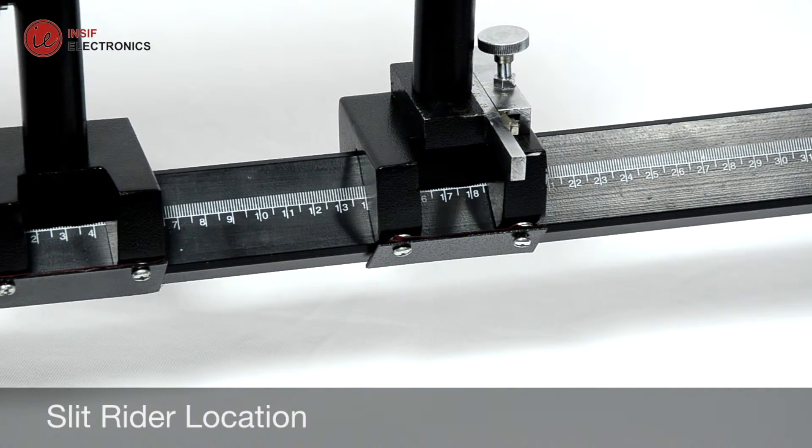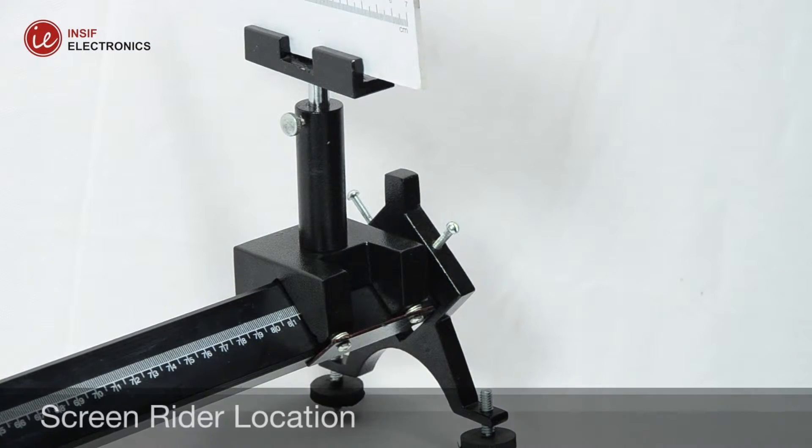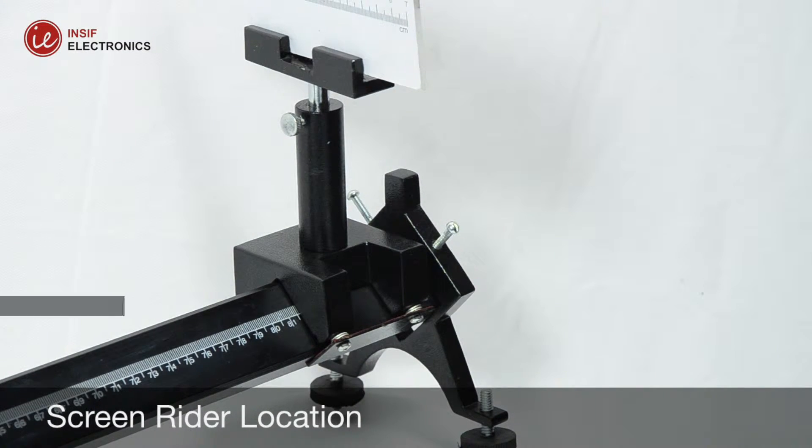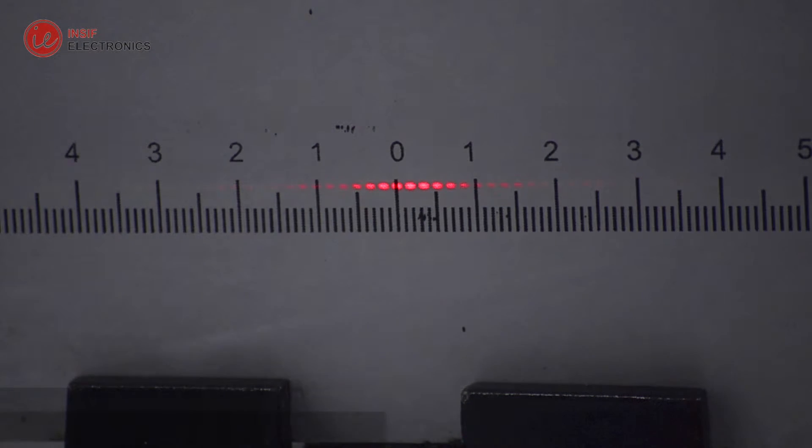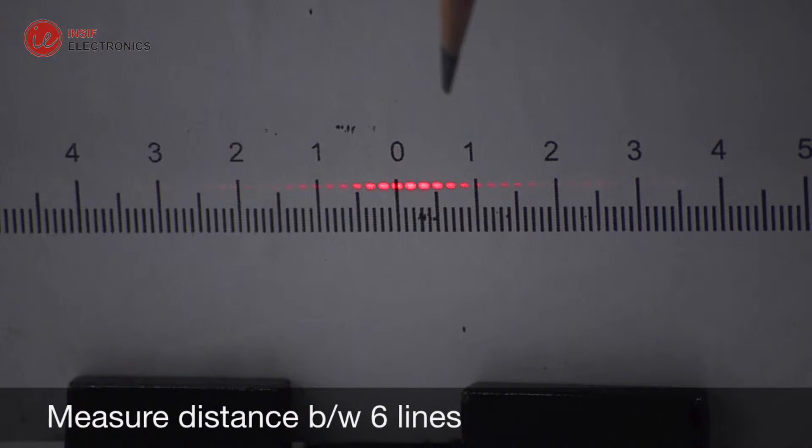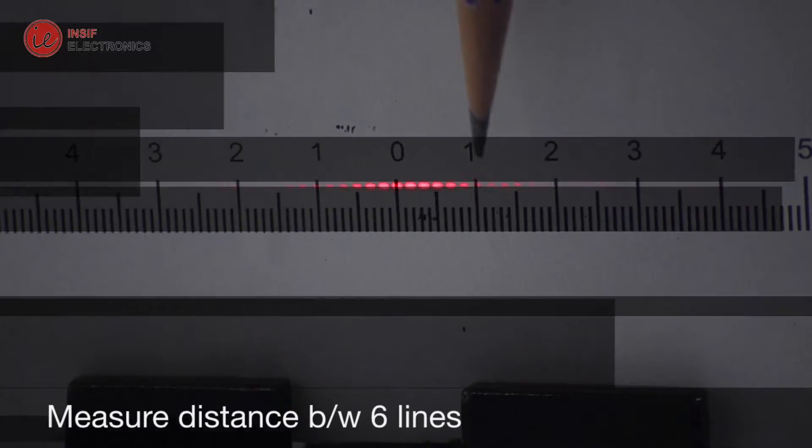Now for the measurements we need to measure the distance from slit to screen. Now measure the distance y from 0 to 6 order or lines, 1, 2, 3, 4, 5, 6, and the distance is 10 millimeters.